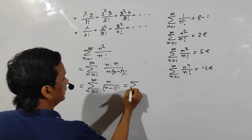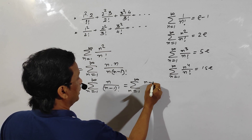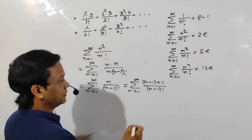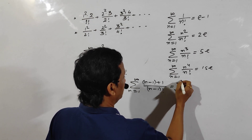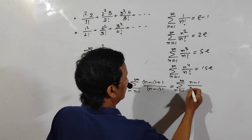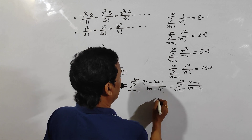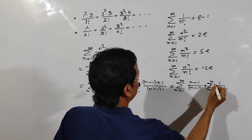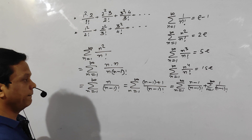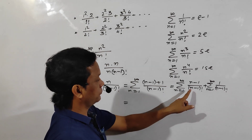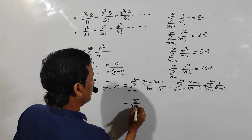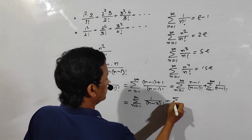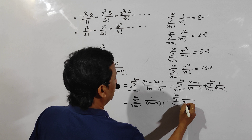This can be written as summation n equals 1 to infinity of (n-1+1) divided by (n-1) factorial. So we get summation n equals 1 to infinity of (n-1) divided by (n-1) factorial, plus summation n equals 1 to infinity of 1 divided by (n-1) factorial. This further simplifies to summation n equals 1 to infinity of 1 divided by (n-2) factorial, plus summation n equals 1 to infinity of 1 divided by (n-1) factorial.